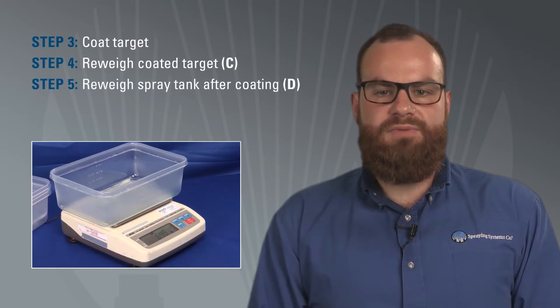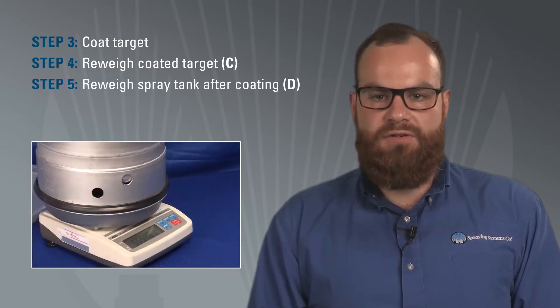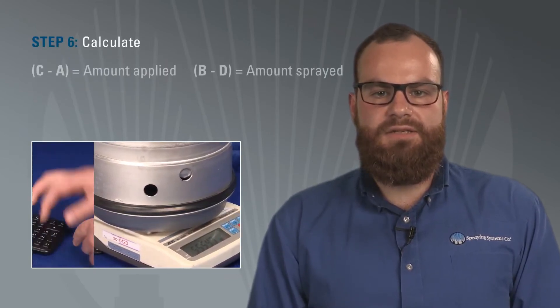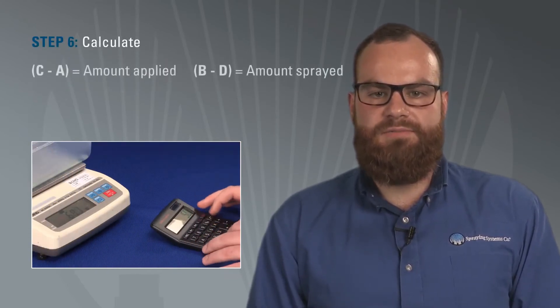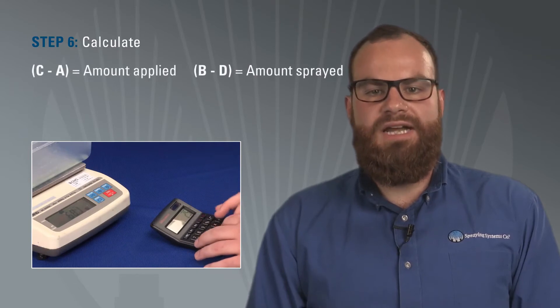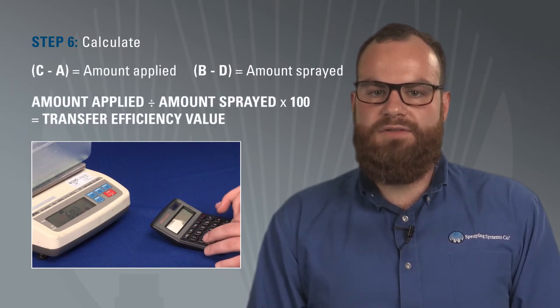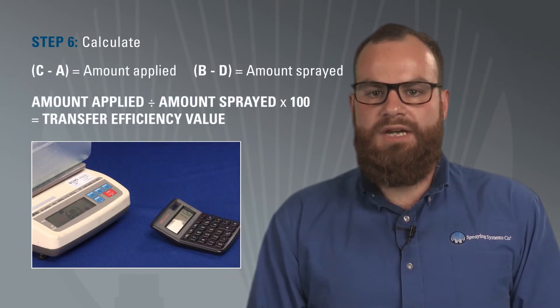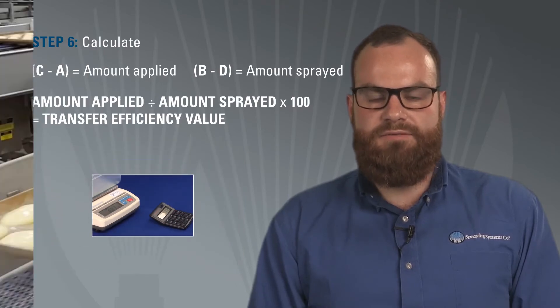Coat your targets that you had initially weighed, and then weigh them again. Next, weigh the spray tank after coating. The difference in the spray tank is the amount of product sprayed. Calculate the amount of the parts as a percent of the total amount sprayed, and this will give you your transfer efficiency value.